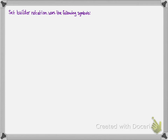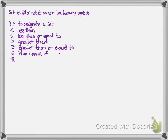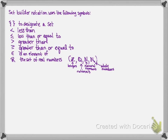Set-builder notation uses the following symbols: curly braces to designate a set, then the inequality symbols — less than, less than or equal to, greater than, greater than or equal to. There is also the symbol that looks like a c with a little line, almost like an e, which represents 'is an element of.' We will see different typefaces representing sets of numbers — this one represents real numbers. You might also see letters designating integers, rational numbers, natural numbers, and whole numbers.